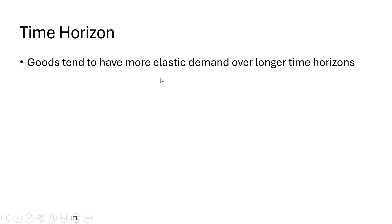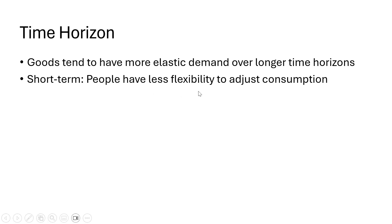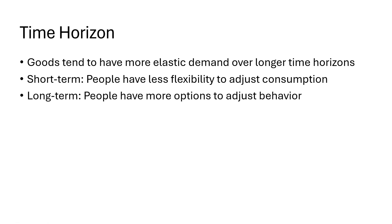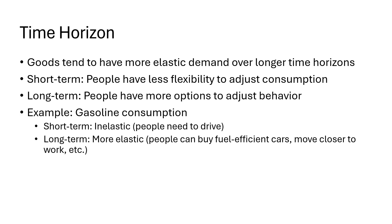Time horizon is another determinant. Goods tend to have more elastic demand over longer time horizons. In the short run, people have less flexibility to adjust consumption patterns from changing prices. In the longer term, people have more options to adjust behavior. For example, if the price of gasoline goes up, demand will be more inelastic in the short run because people still need to get to school and work. In the long run, demand for gasoline is more elastic — people can sell their gas-guzzling vehicle, buy something more fuel efficient, or move closer to work. So in the long run, it's easier to adjust to price changes.